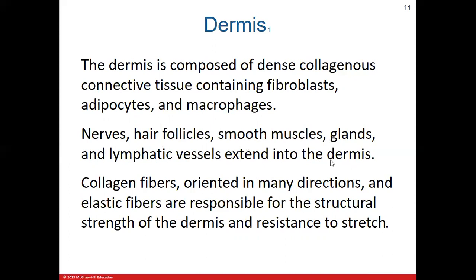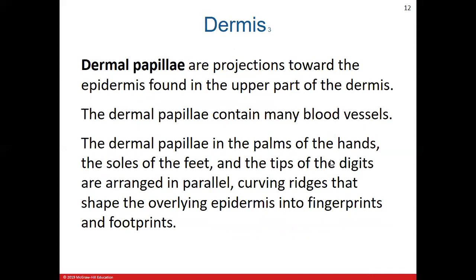Towards the upper portion of the dermis, right next to the epidermis, is a curved region called the dermal papilla. This is where you'll find a large number of blood vessels that help supply the epidermis with the blood supply it needs. Remember the stratum basale layer contains living cells, and those living cells must have a blood supply — and those blood vessels are located in the dermal papilla region.